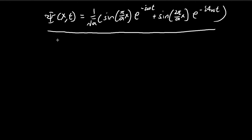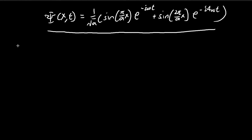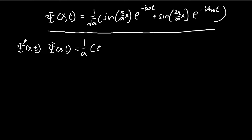The second thing we need to find is the expression |Ψ|² for calculating probability. We take the conjugate and then multiply it by itself. Both expressions have a factor of 1 over square root of a; two such factors multiply together. Then on top we form the conjugate of the wave function. When taking the conjugate, the imaginary exponent flips sign.